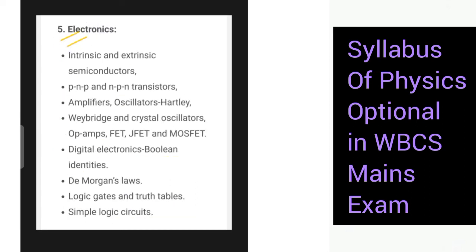Next we have this portion on electronics: intrinsic and extrinsic semiconductors, PNP and NPN transistors. Then amplifiers, oscillators, Hartley, Wien bridge and crystal oscillators. Op amps, FET, JFET, MOSFET. Then digital electronics: Boolean identities, De Morgan's laws, logic gates and truth tables, simple logic circuits. So that was all about the latest syllabus for this year's examination for the optional paper.